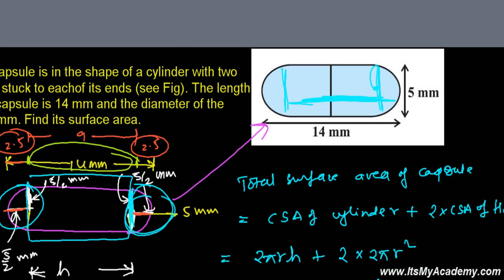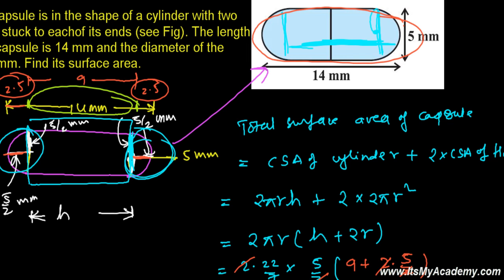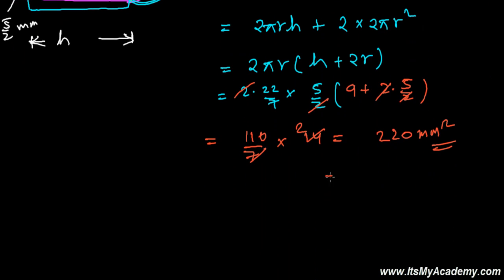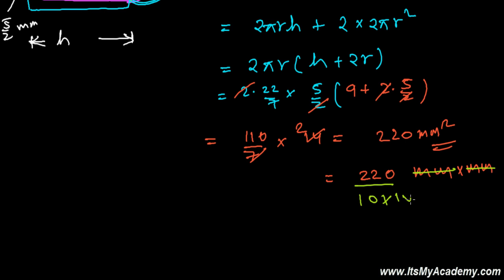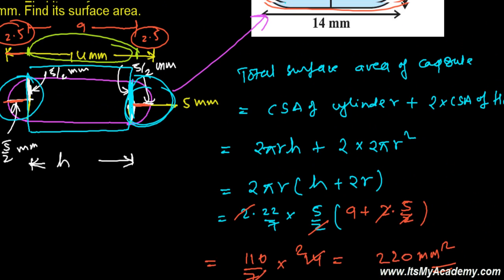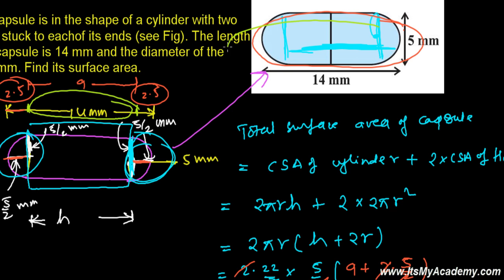The capsule is very small, which is why the unit is mm². If you want to convert to centimeters squared: 220 mm² = 220 ÷ 10 ÷ 10 = 2.2 cm². I hope you understand. If you have any confusion, please leave a comment below and I will reply. See you in the next video, goodbye!